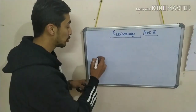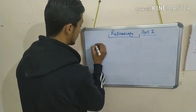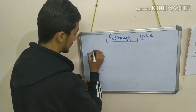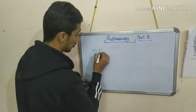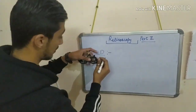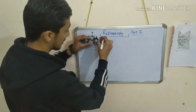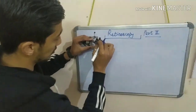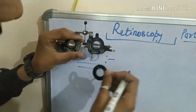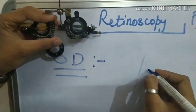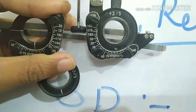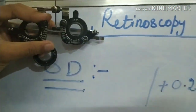Now we will learn how to document this power in retinoscopy. First, you have to write OD. For example, you have the findings: cylindrical plus 0.25 at 140 degrees. You write here: sphere — for this meridian neutralized at plus 3.75 — and cylinder plus 0.25 at 180 degrees.